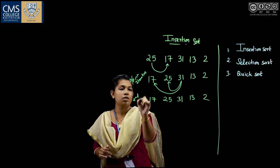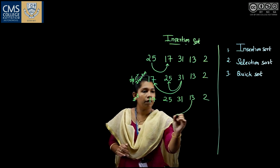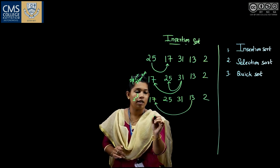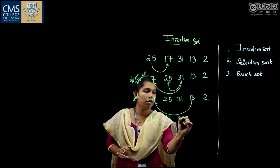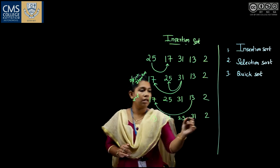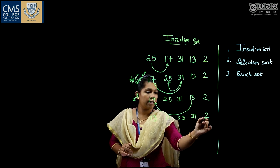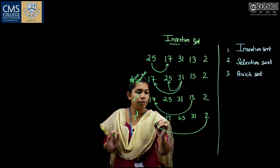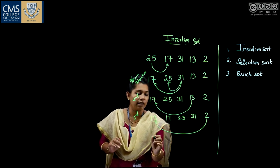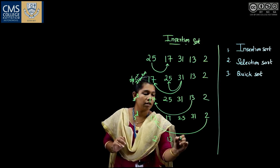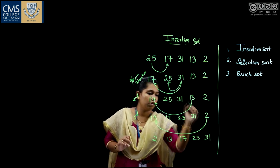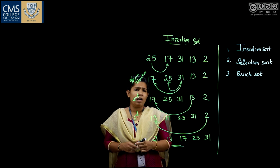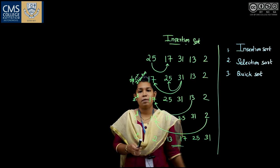In the third iteration, compare 13 with 17. You find that 13 is less than 17, so 13 comes to that position and the remaining elements are shifted. This is the output of the third iteration. Next, compare 2 with 13. Since 2 is less than 13, bring 2 to this position and shift the remaining elements.